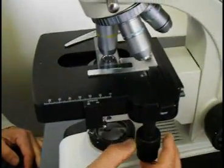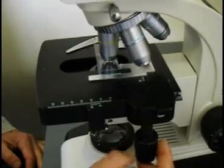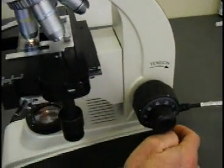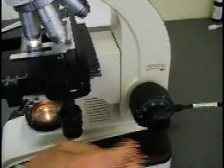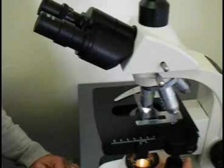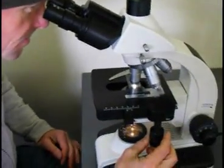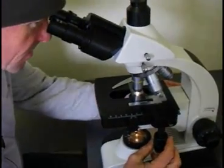In this particular instance at the back right hand side is the on off switch, and when you switch it on you can see the light shines from below through the specimen and into the microscope. We look down from above with both eyes open and focus the slide to look for disease organisms.